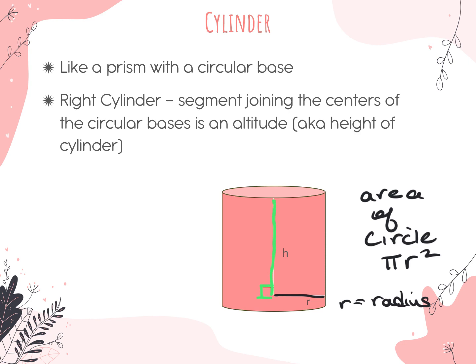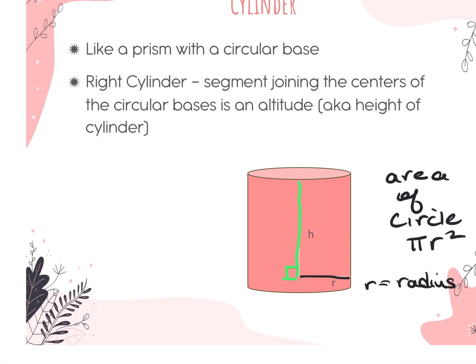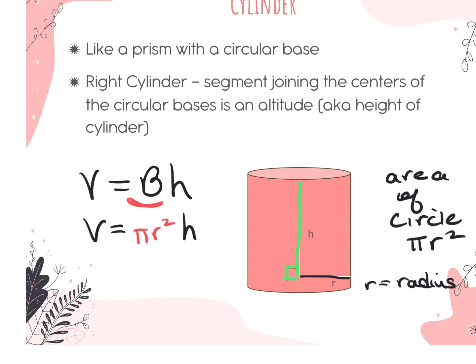Coming up in another two slides, we'll see the official formula for volume of a cylinder. It's still capital B times height, but now capital B is a circle, so it becomes π r squared. Then multiply by the height.